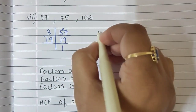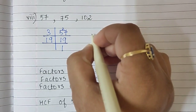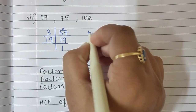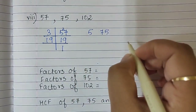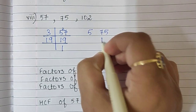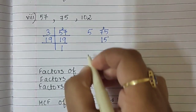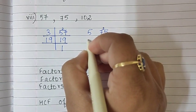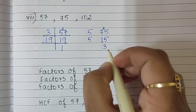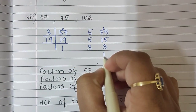Now we find the factors of 75. 75 ends with 5, so we begin with 5. 5 fifteens are 75. Again 5 threes are 15, and 3 ones are 3.